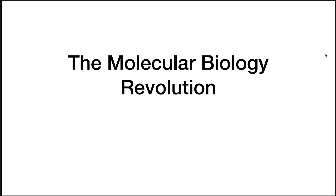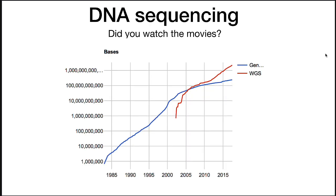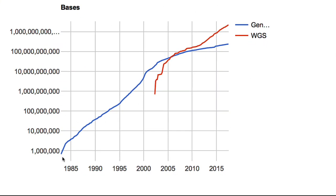Today we're going to talk about the molecular biology revolution, which has completely changed how we do genetics in bacteria and all other organisms. One of the cornerstones of this has been DNA sequencing. In this graph, you can see that over the last three decades, the amount of bases has gone from around a million back in 1980 to hundreds of millions and billions of base pairs. This is a log scale, and you see a linear increase in the amount of sequence. After about 2000, when we did the human genome, we started sequencing lots of other genomes, and there are now thousands of whole genome sequences.